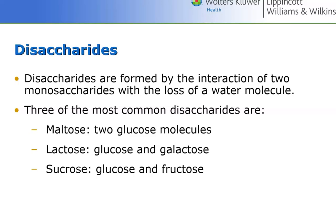Glycosidic bonds are formed between two monosaccharides because they're no longer hydrated — it's a dehydration synthesis reaction that forms a disaccharide. You remove a water and you form a glycosidic bond. Maltose is made up of two glucose molecules, lactose is made up of glucose and galactose, and sucrose is made of glucose and fructose.